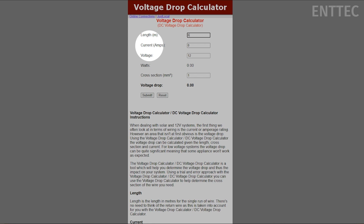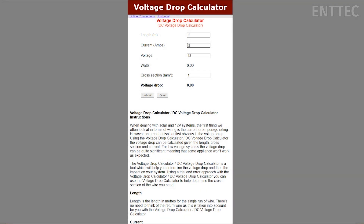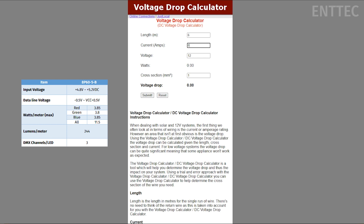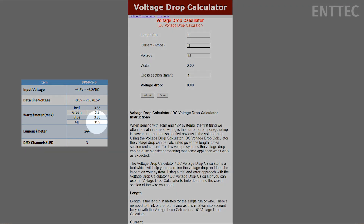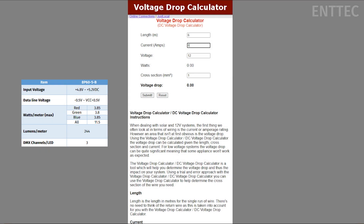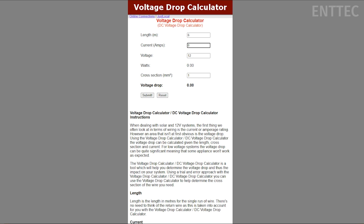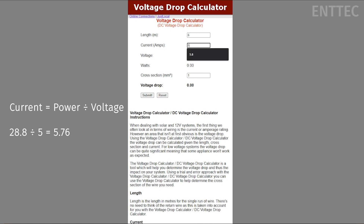Current. We have to calculate the current running through these cables using data from our tape's data sheet. The max power consumption of the 8P60-5-B is 11.5 watts per meter and our strip is five meters long. The total power needed to run at maximum output will be divided by two, as we assume that half of the strip's power will be going to the front power injection and half through the second. This means we'll be running 28.8 watts. Now we can use the formula current equals power divided by voltage, or 28.8 divided by five, to calculate our current which is just under 5.8 amps.